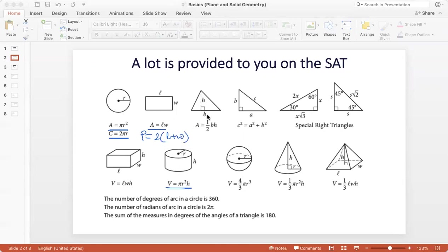A triangle is given with base B and height H, and the area half base into height is given. A right triangle is given with hypotenuse C and the other two sides A and B. So the Pythagorean theorem, C squared is A squared plus B squared is given.